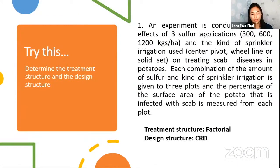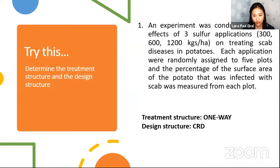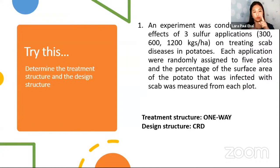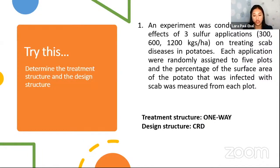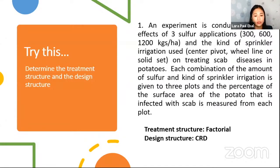Using the potato example: since we are dealing with one factor that has three levels, the treatment structure is one-way. For the design structure — although we haven't fully learned CRD yet — this is where the different levels are randomly assigned to different experimental units. Since the treatment applications are randomized across experimental units, the design structure here is CRD. We will learn more about CRD later.